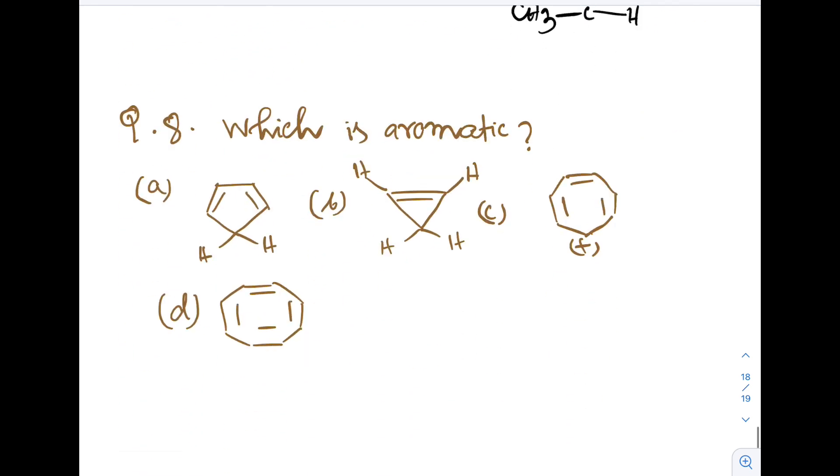Question 8. This is a straightforward question from Huckel's rule of aromaticity. Which is aromatic? First option has SP3 hybridized carbon, so this is non-planar and non-aromatic. Second option has another SP3, so tetrahedral and non-planar, hence non-aromatic. This one is aromatic.